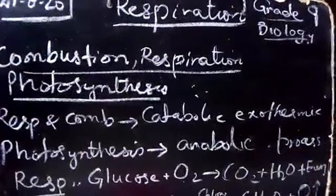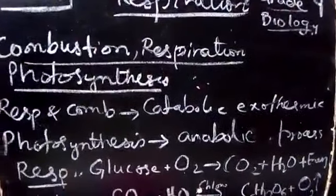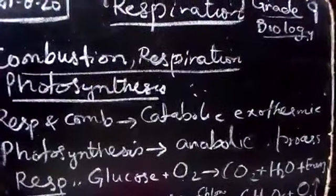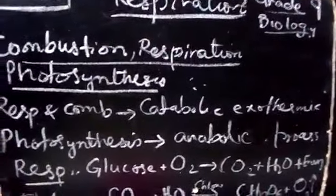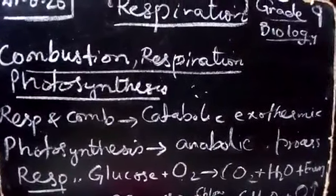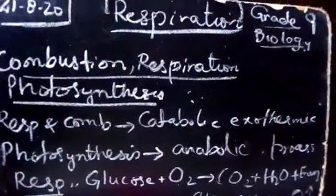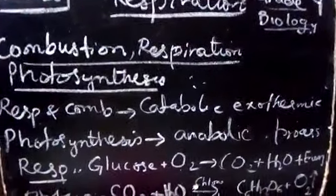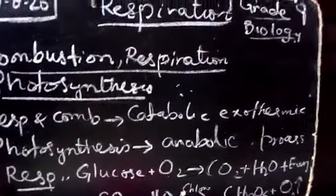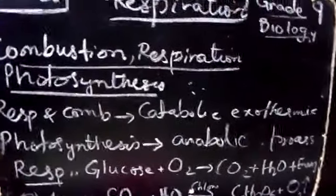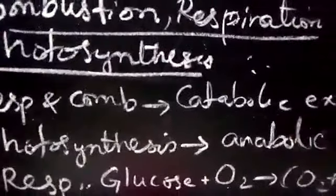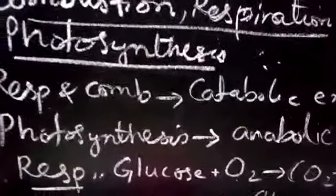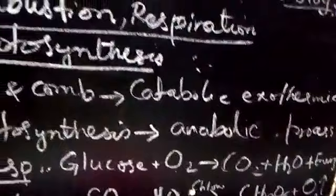As we are talking about in plants, respiration and combustion are catabolic and exothermic reactions. This is a metabolic process that is destructive. What is combustion? We burn something like wood or coal. When we are burning things, we also release a lot of energy as heat.